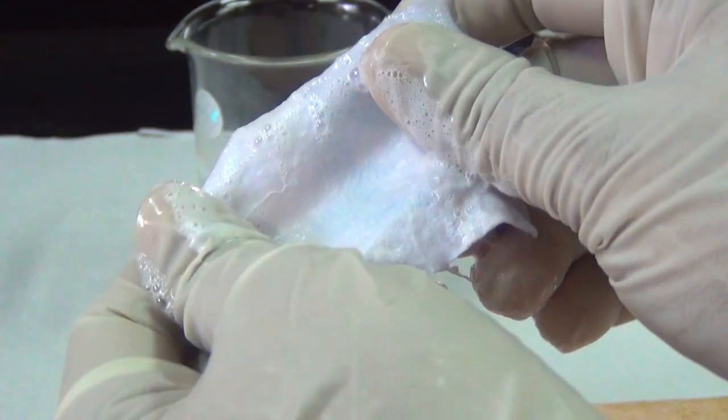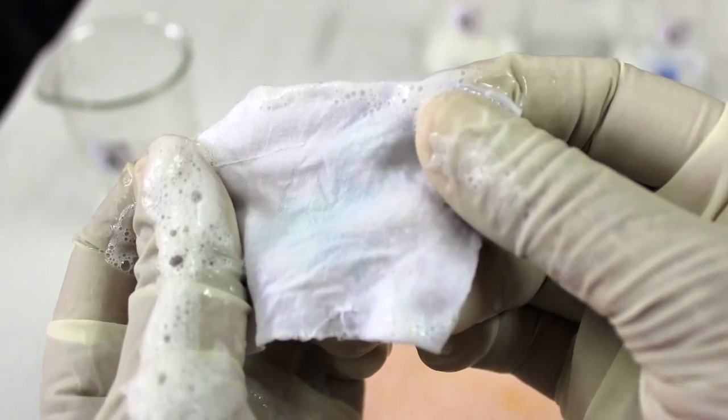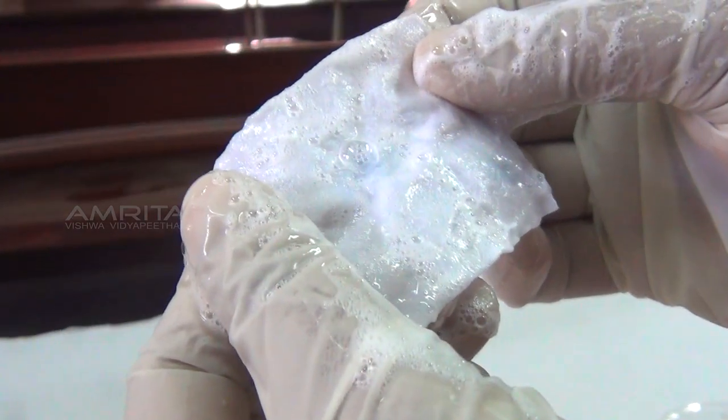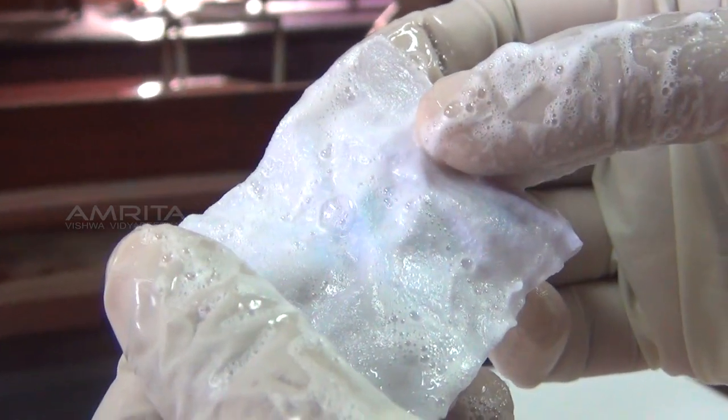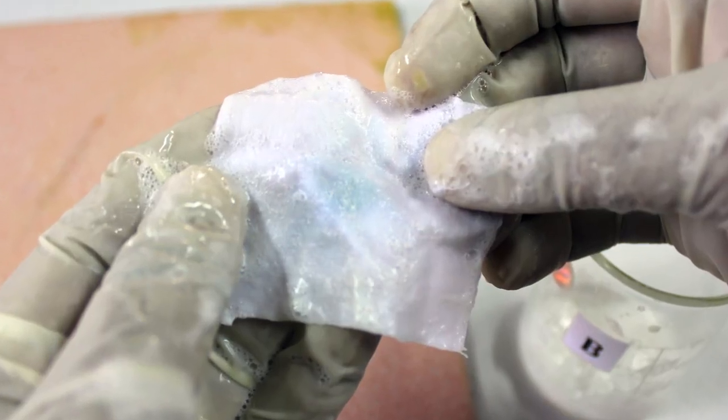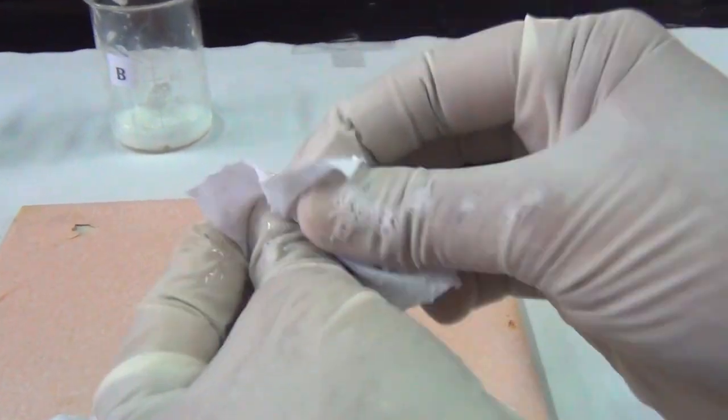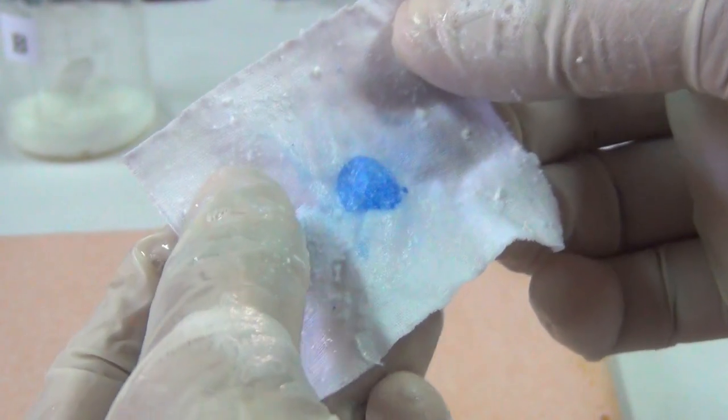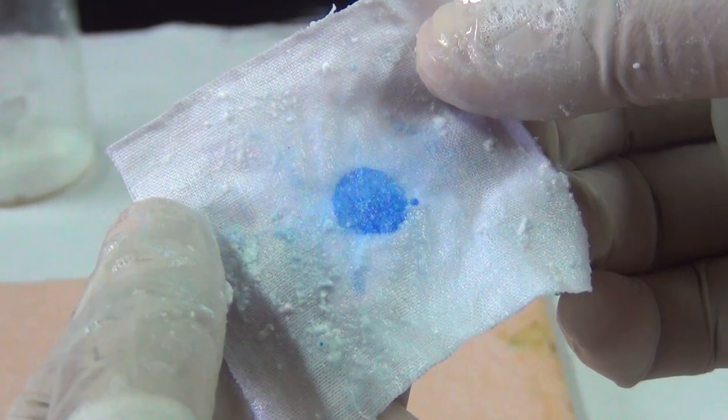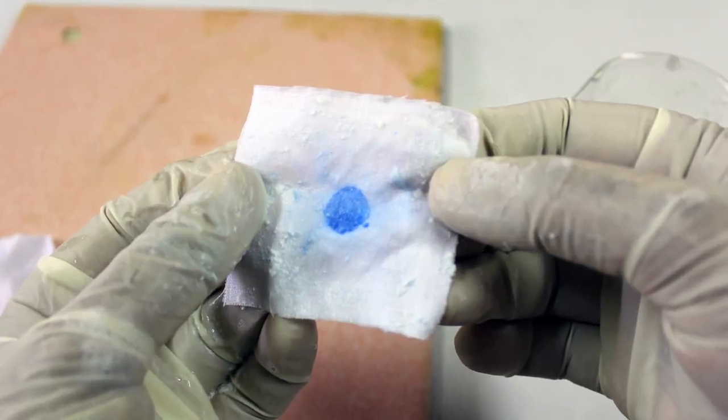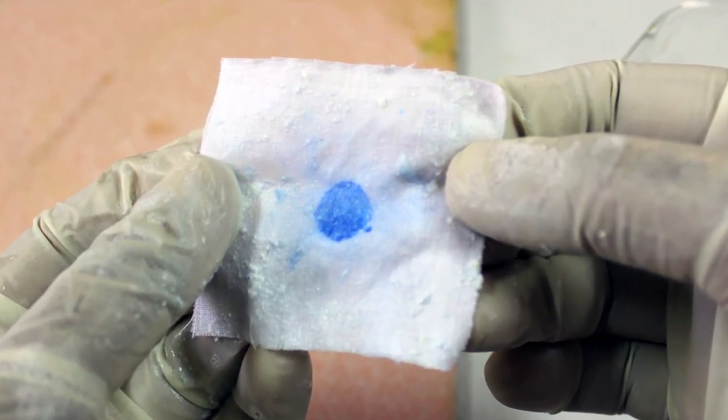The ink spot on the cloth dipped in soap solution A has almost disappeared. The ink spot on the cloth dipped in soap solution B has partially disappeared. There is no change in the colour of the ink spot on the piece of cloth dipped in soap solution C, rather some scum has been deposited on the surface of the cloth piece.